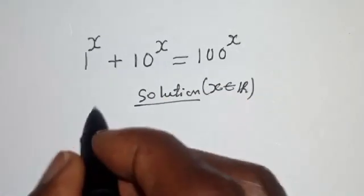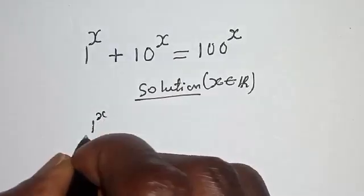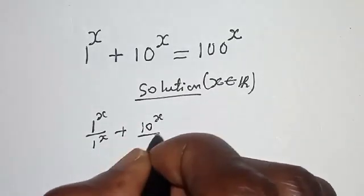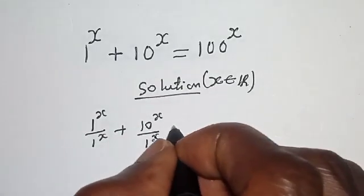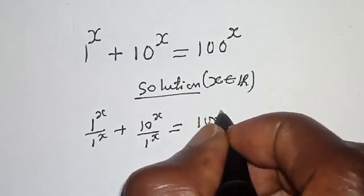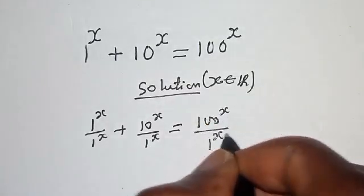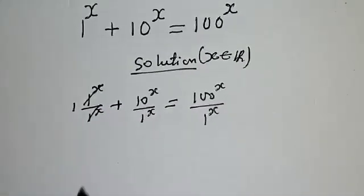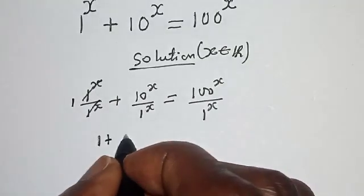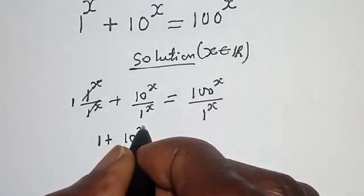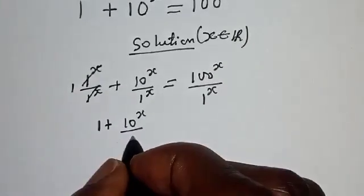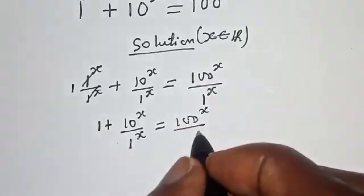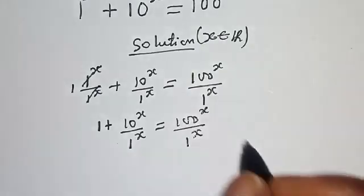Let's divide all through by 1 raised to power s. So we have: 1^s / 1^s plus 10^s / 1^s is equal to 100^s / 1^s. This cancels to give 1 plus 10^s / 1^s is equal to 100^s / 1^s.